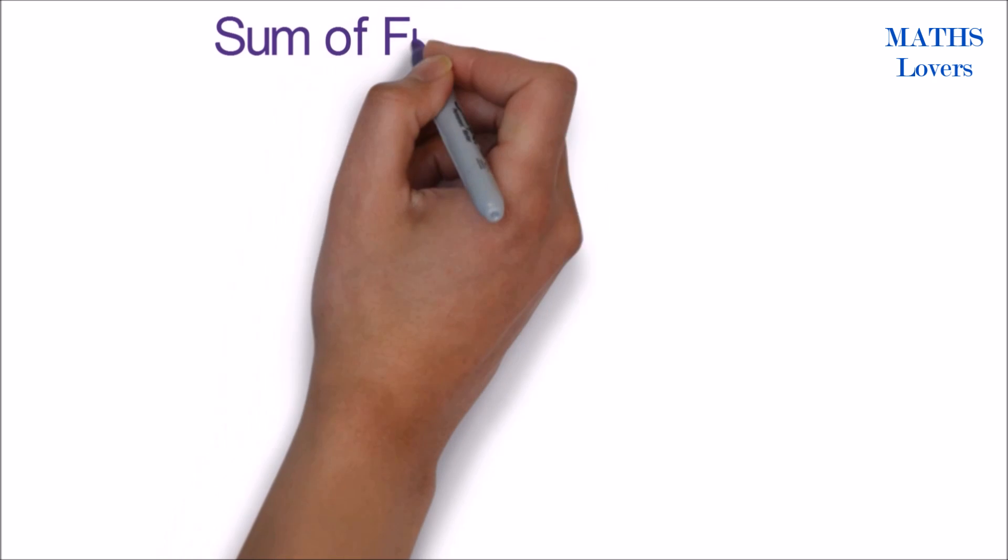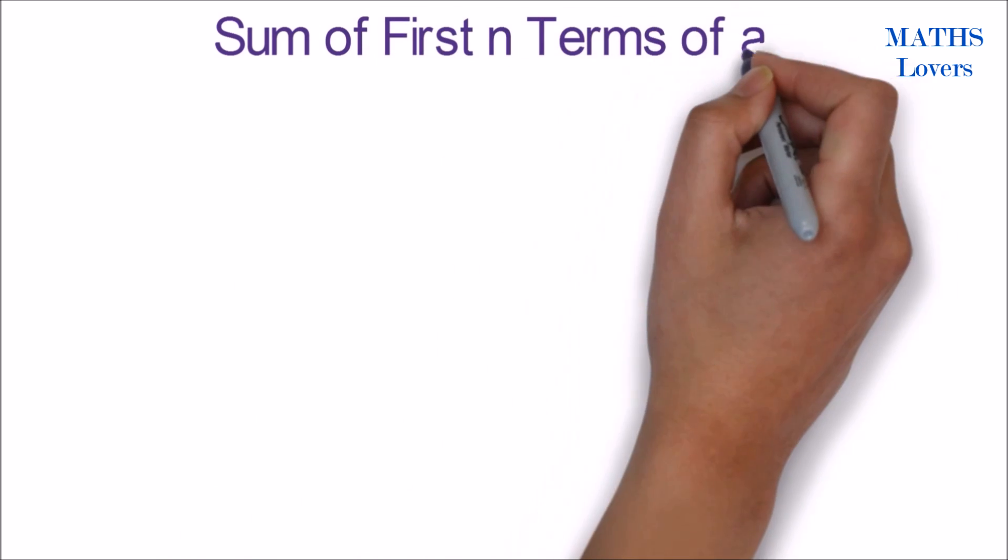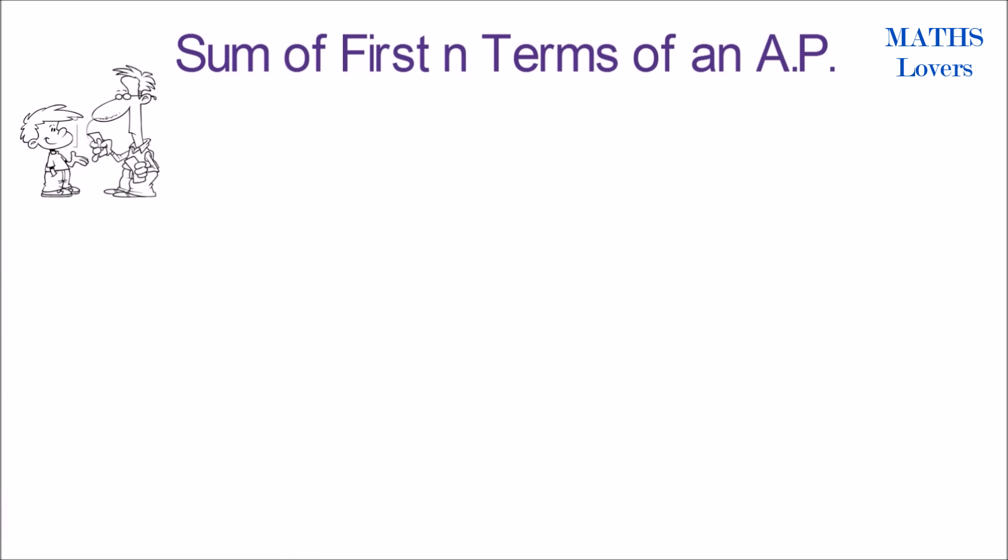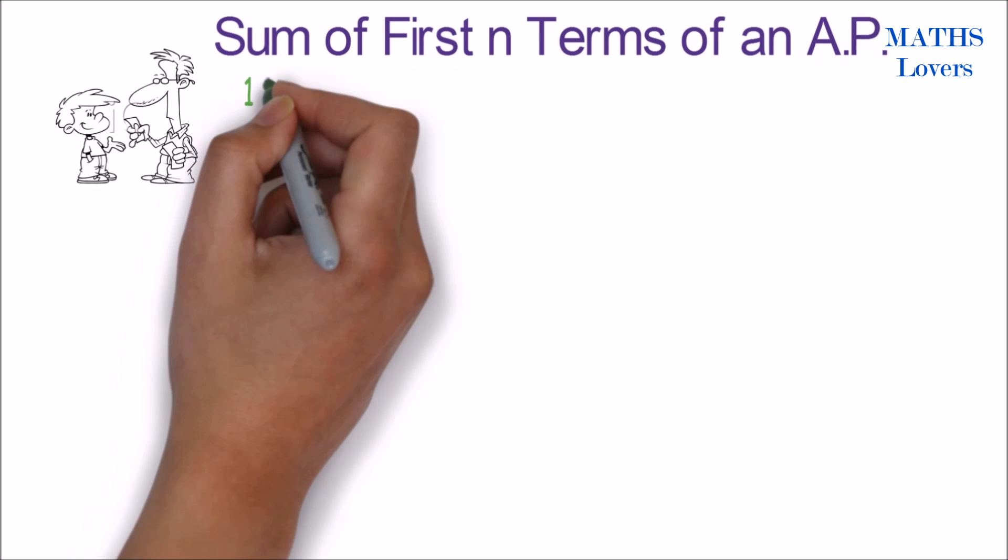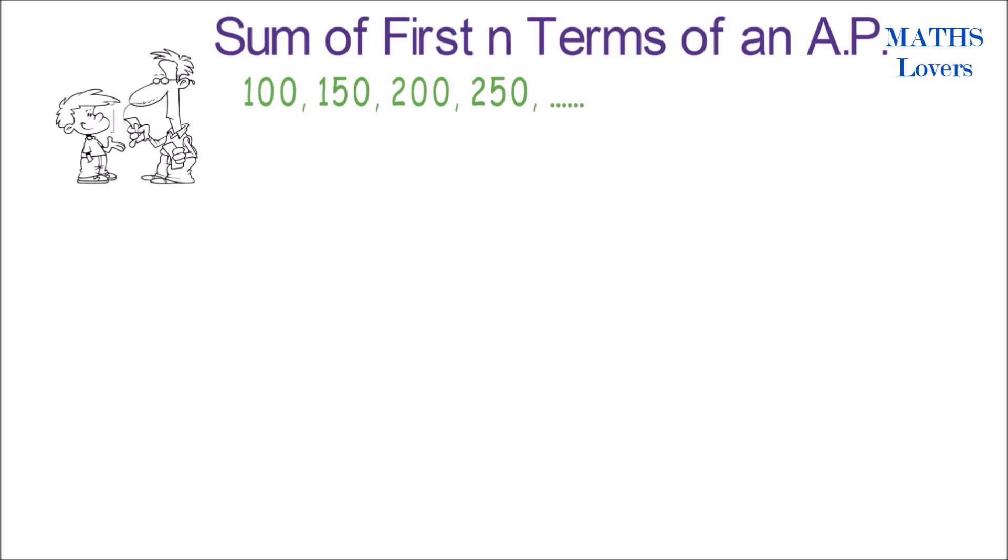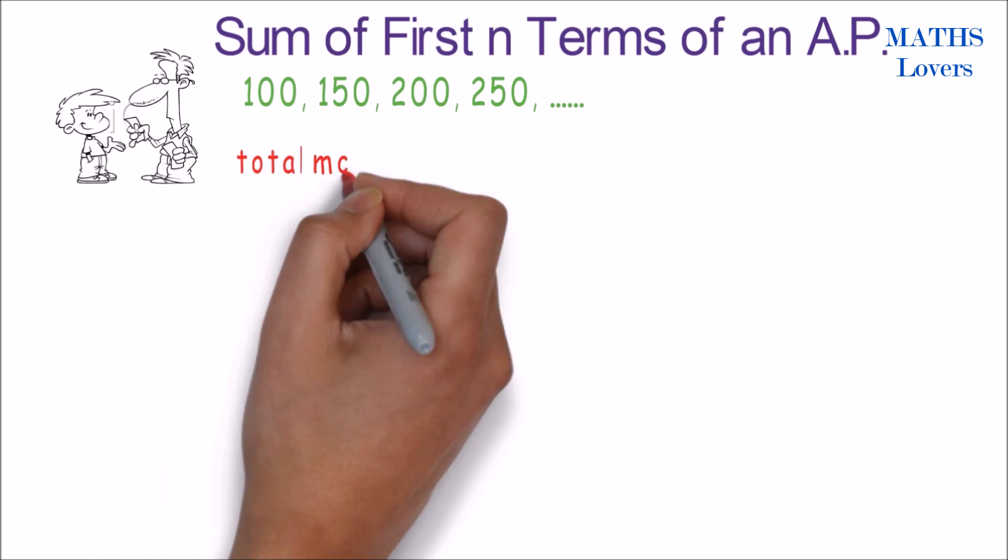Now let's proceed to the sum of first n terms of AP. For example, your father gives you pocket money every month starting from 100 rupees and increases by 50 rupees each month. Like first month 100, next month he gives 150, next 200, and so on. If anyone asks what will be the total money after 12 months you will have, how will you do?